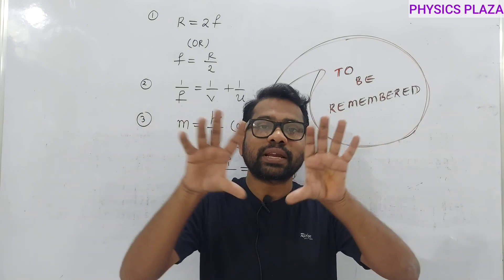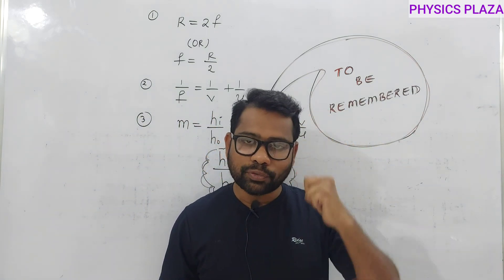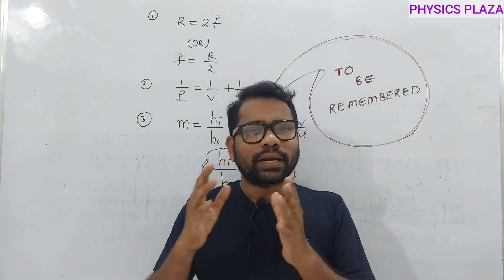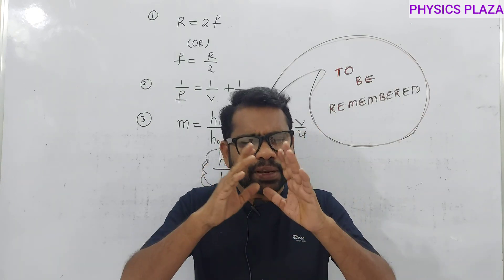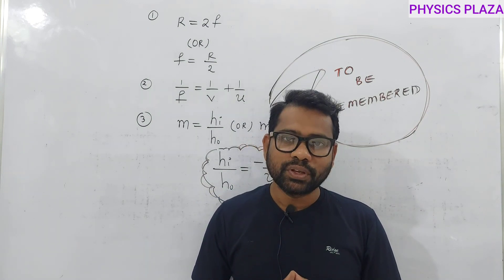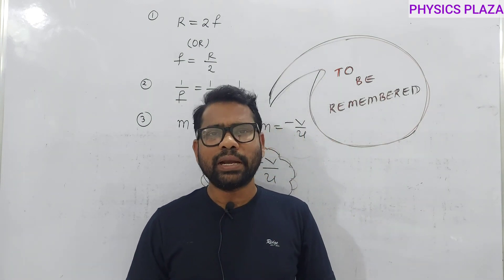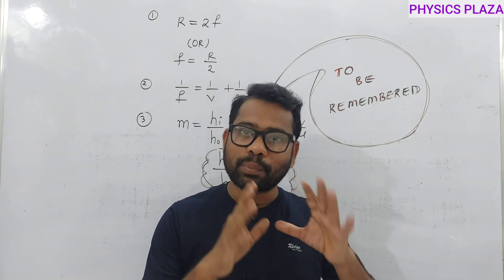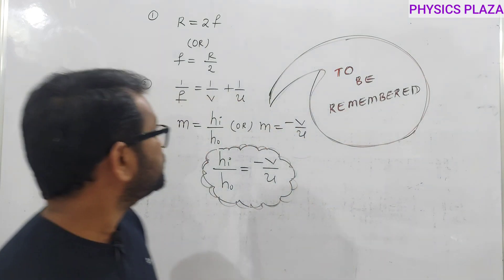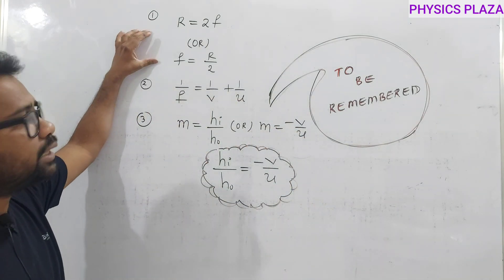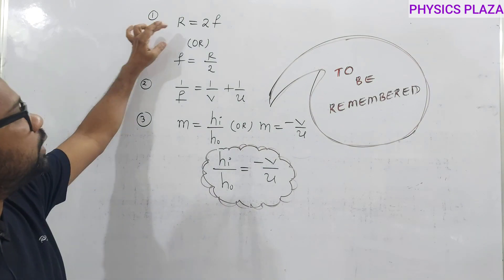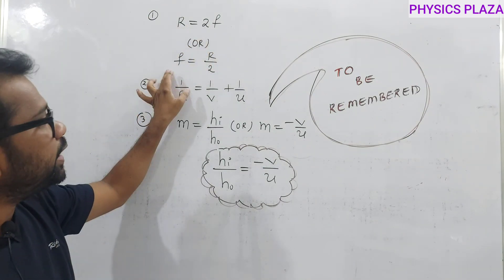So formulas plus sign convention rules — if we can remember the formulas and apply the sign conventions properly, then we get the correct answer. It is very simple, but we need a little bit of practice. Before going to solve the numericals, let us see what formulas are important. The first formula is the relation between radius of curvature and focal length: R = 2f, so f = R/2.